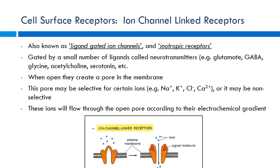Ion channel linked receptors are also known as ligand-gated ion channels or ionotropic receptors. When a ligand binds the receptor, it causes a conformational change — usually the transporter opens and allows some influx of ions. Good examples of ligands that do this are neurotransmitters: glutamate is a really big one, and GABA is another important one. Think of GABA as the brakes on your system — if you're having a seizure with too many action potentials firing, GABA can shut all that down.